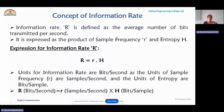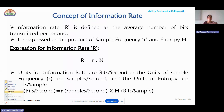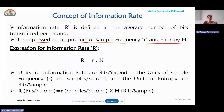Information rate is generally represented with the variable capital R. It is defined as the average number of bits transmitted per second — that is, how many bits are transmitted per second — whose units are bits per second. Mathematically it is expressed as the product of sampling frequency small r and entropy capital H.